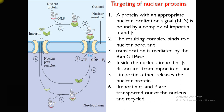The importin-alpha and importin-beta protein complex then binds to the nuclear pore complex and passes through it. The resulting complex binds to the nuclear pore and translocation is mediated by RanGTPase. Inside the nucleus, importin-beta dissociates from importin-alpha, and importin-alpha releases the nuclear protein, delivering it to the nucleus where it is required.